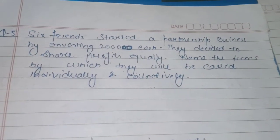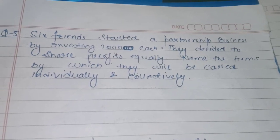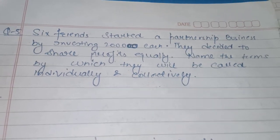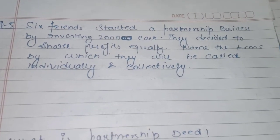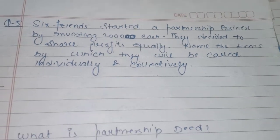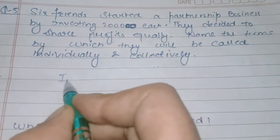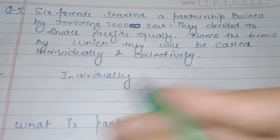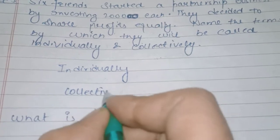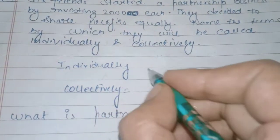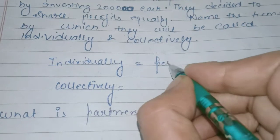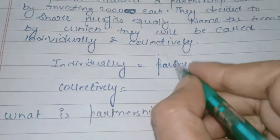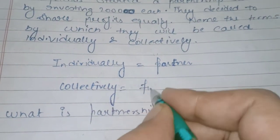Next question: Six friends started a partnership business by investing two lakh each. They decided to share the future profits equally. Name the term by which they will be called individually and collectively. Individually, what will each person be called alone? And collectively, when all six friends stand together, what will they be called? Individually, each person will be called a partner. Collectively, they will be called a partnership firm.